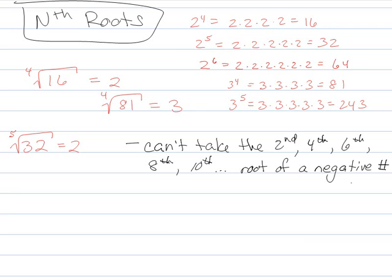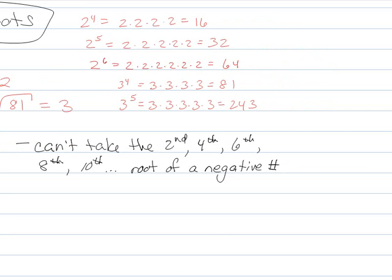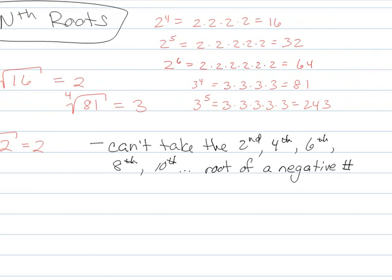And that's again because if I multiply 2 negative numbers together, I'm going to get a positive number. So if I multiply 4 negative numbers together or 6 negative numbers together. So like here's 4 negative numbers. What's going to happen? Those 2 negatives are going to cancel out and those 2 negatives are going to cancel out.